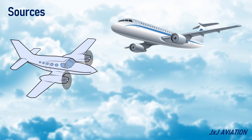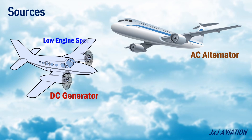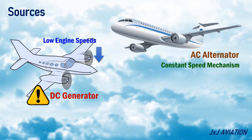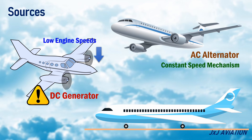The engines may be connected to a DC generator or an AC alternator. At low engine speeds, the DC generator may not produce sufficient electrical current. The AC alternator is installed with a constant speed mechanism, which ensures constant electric current supply even at low engine speeds. When an aircraft is on the ground, an external ground power unit may be connected to the aircraft, and it also becomes a source of electrical power.